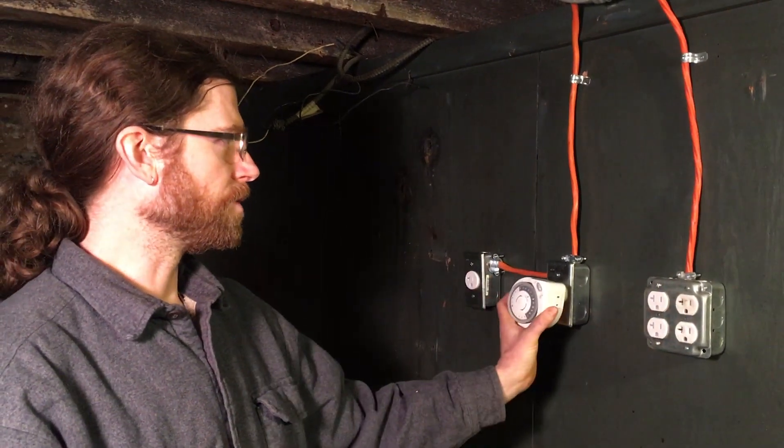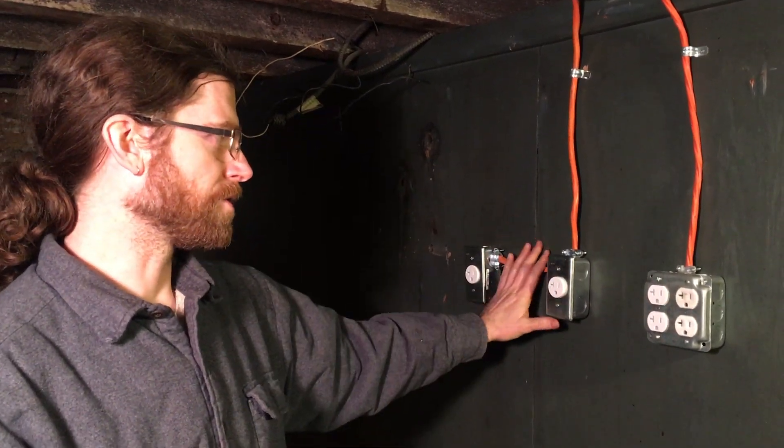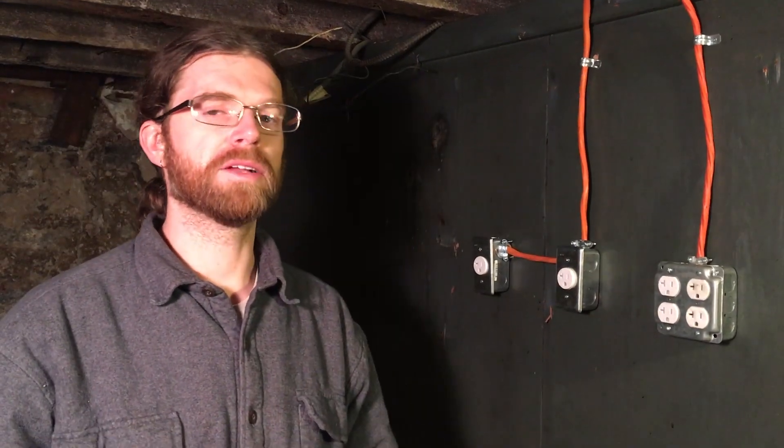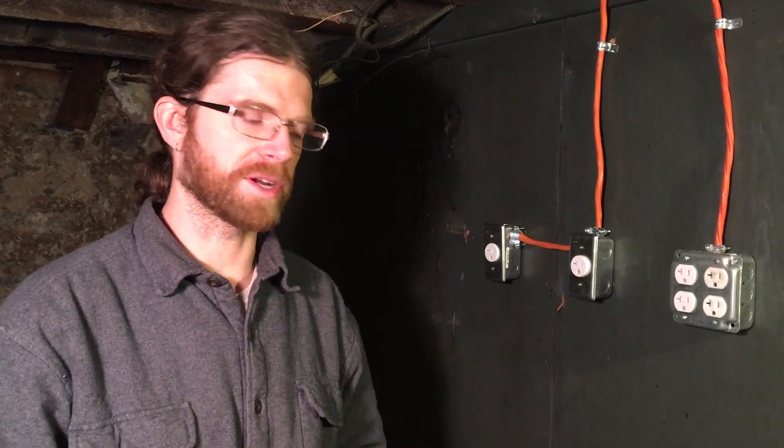This is a 30 amp breaker on its own outlet, which will run two ballasts at 10 amps each. So that's 20 amps on a 30 amp breaker.